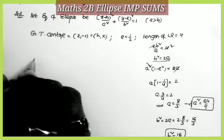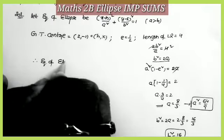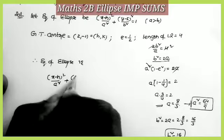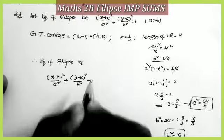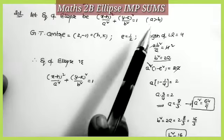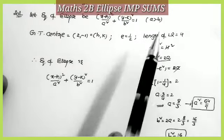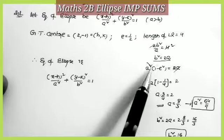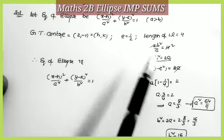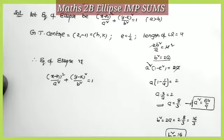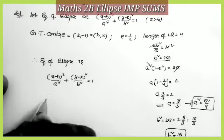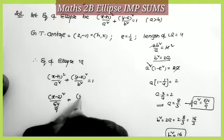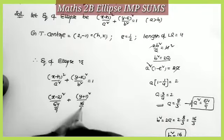Now substituting these values into the ellipse equation: (x−h)²/a² + (y−k)²/b² = 1. With h = 2, k = −1, a² = 64/9, b² = 16/3: (x−2)²/(64/9) + (y+1)²/(16/3) = 1. This is written as 9(x−2)²/64 + 3(y+1)²/16 = 1.